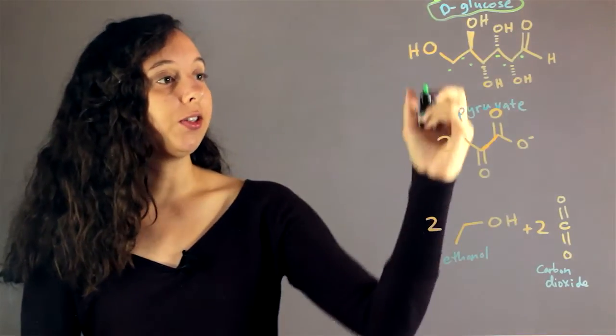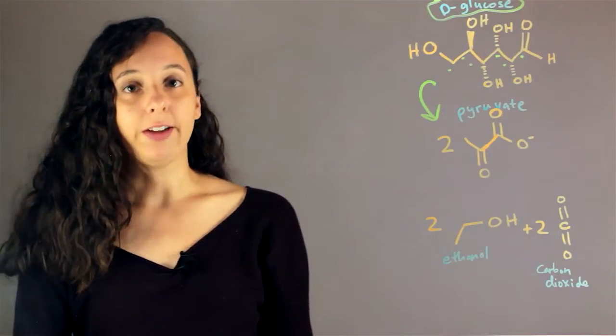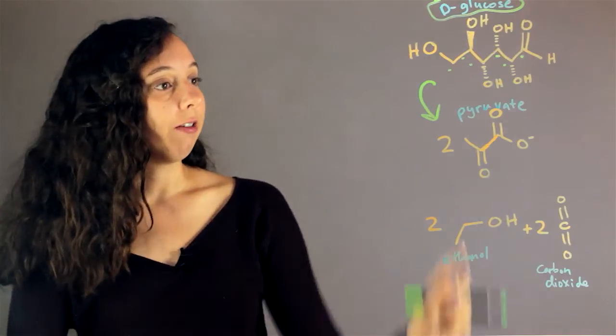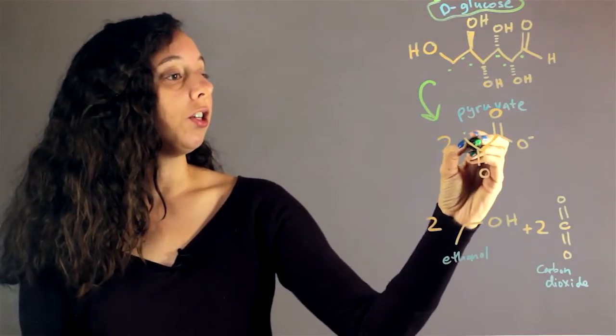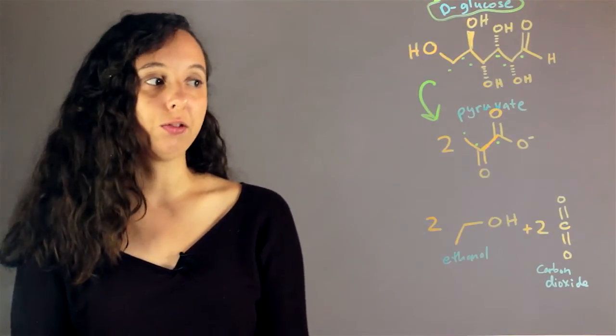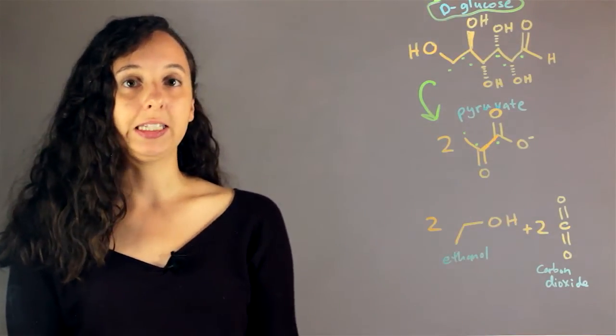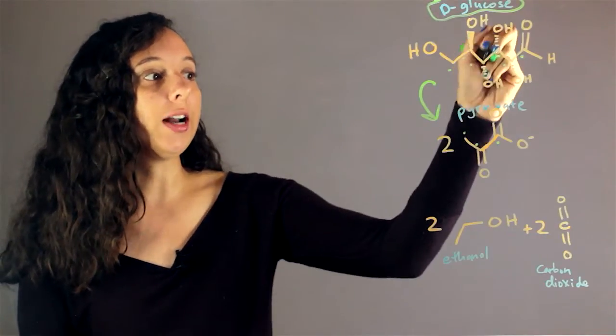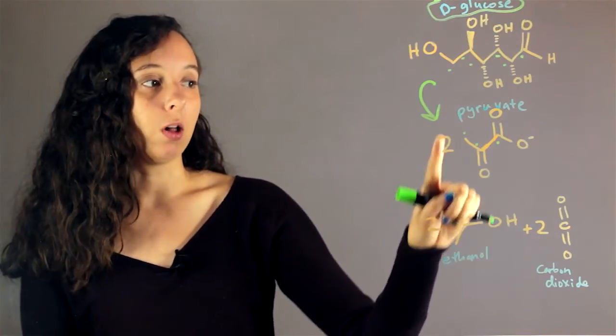The first step is breaking glucose down into pyruvate. If we look at pyruvate we can see it only has one, two, three carbons, half as many as glucose. But in this reaction we actually form two pyruvates. So we've basically split our sugar in half and are starting to form a smaller molecule.